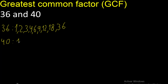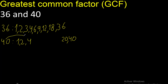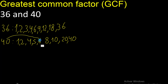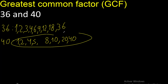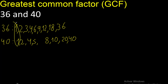Factors always start with 1. 40 divided by 1 is 40. Divided by 2 is 20. Cannot be divided by 3. Next, divided by 4 is 10. Next, divided by 5 is 8. Cannot be divided by 6. Cannot be divided by 7. Next, 8 — 8 is here.